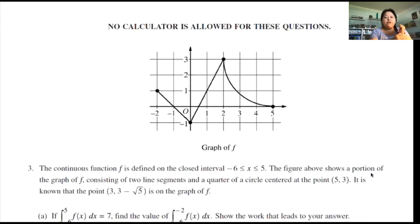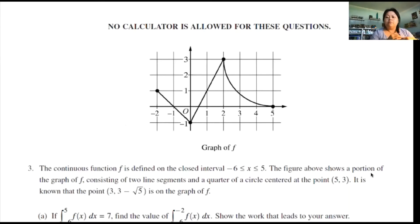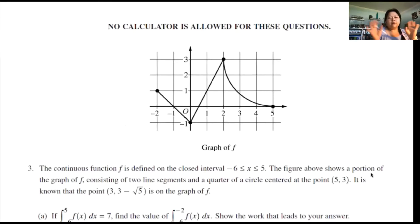This is 2019 FRQ number 3, on the non-calculator portion. Number 3 says: the continuous function f is defined on a closed interval between negative 6 and 5. The figure shows a portion of the graph of f consisting of two line segments and a quarter circle centered at point (5, 3). It is known that the point (3, 3 minus root 5) is on the graph of f — that will come in handy later.